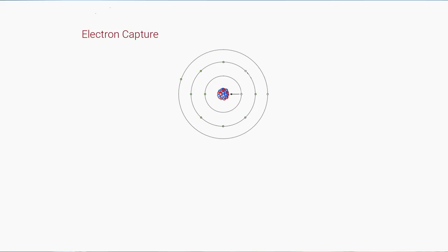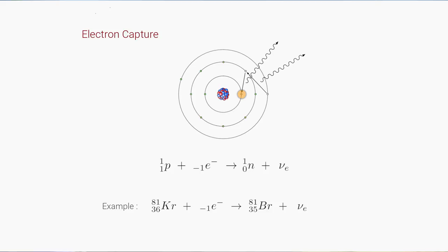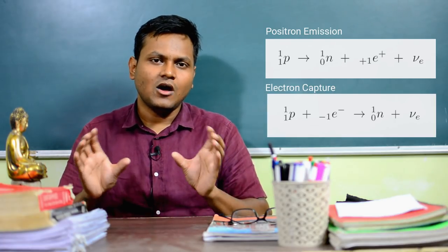There is also a process called electron capture, similar to positron emission in that a proton converts to a neutron, but it happens differently. In nuclei where protons are in excess, the nucleus absorbs a nearby electron from its nearest K-shell. After absorbing the electron, the proton becomes a neutron, also emitting a neutrino. Once electron capture occurs, there is a vacancy in the electron energy level that can be filled by an electron from a higher level, consequently leading to the emission of an X-ray. In this sense, positron emission and electron capture are opposites of each other.